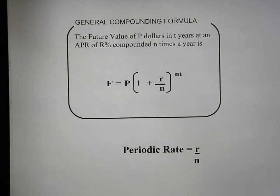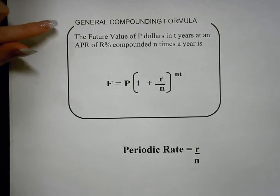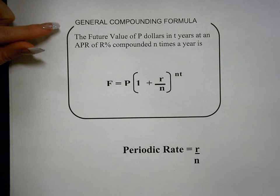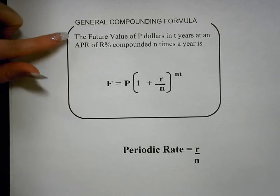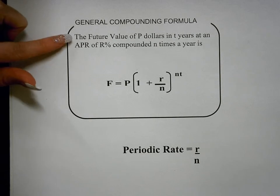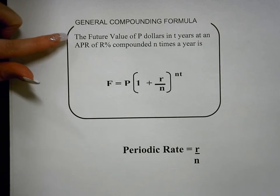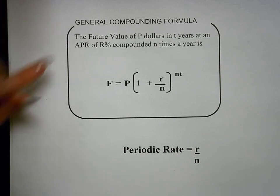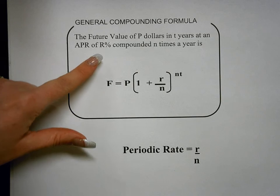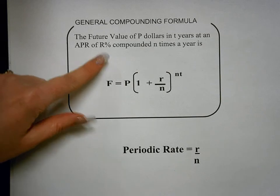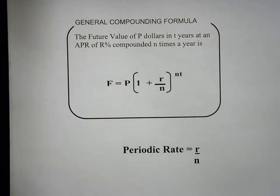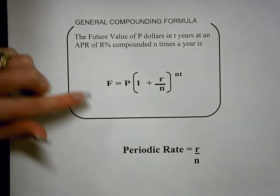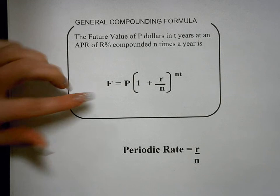The next thing we are going to be discussing is the general compounding formula. The general compounding formula is the future value of P dollars and T years at an APR of capital R percent compounded N times a year. It's found by this formula.